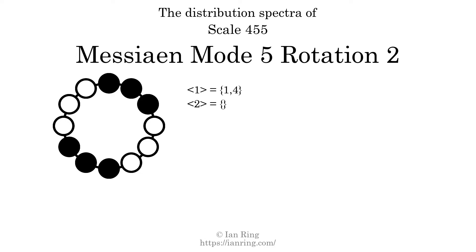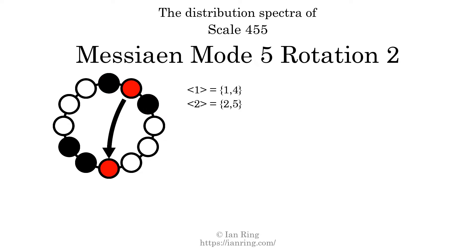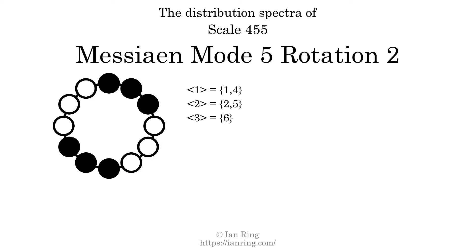The generic interval of 2 scale steps comes in 2 different specific interval sizes: 2 semitones and 5 semitones. The spectrum width of this generic interval is 3. The generic interval of 3 scale steps has just 1 specific interval size: 6 semitones. The spectrum width of this generic interval is 0. The generic interval of 4 scale steps comes in 2 different specific interval sizes: 7 semitones and 10 semitones. The spectrum width of this generic interval is 3.